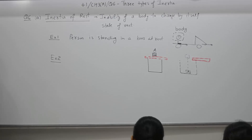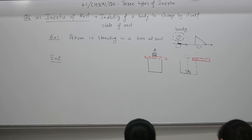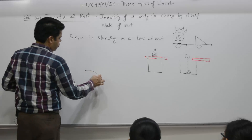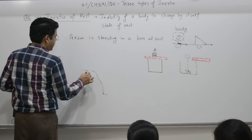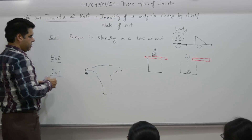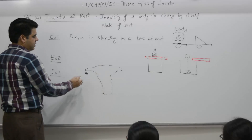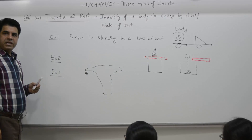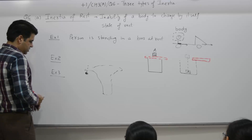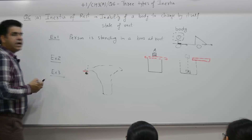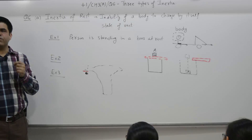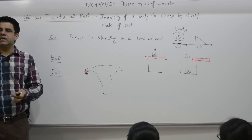Example three: when we shake a branch of a mango tree, the mangoes fall down. If you shake the branch, the mango has a tendency to remain at rest but the branch is set in motion. So there is a jerk or impulse acting at the stem, and the mango gets detached and breaks off because it has a tendency to be at rest.